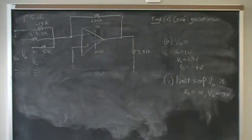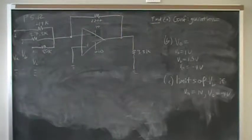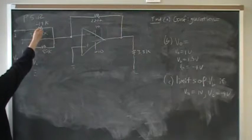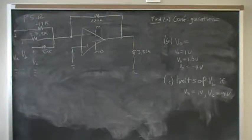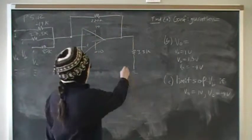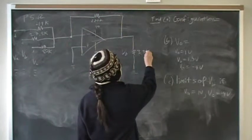This is problem number 12 from chapter 5 on op amps. We have three signals going in. The first signal goes through a 44k resistor, the second through a 27.5k, and the third through an 80k. There's a feedback resistor of 220k and a 3.3k on the output.